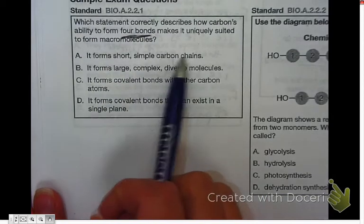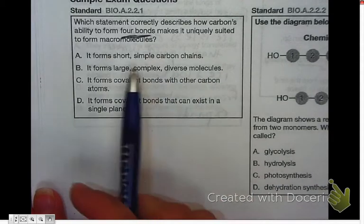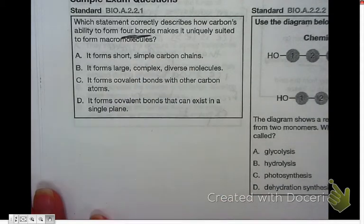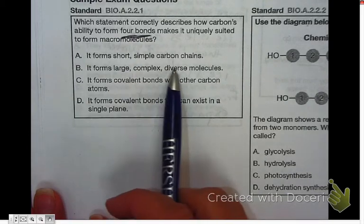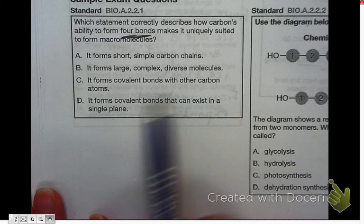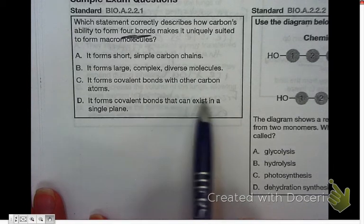It forms short, simple carbon chains? Well, it can. It forms large, complex, diverse molecules? It can. But we want to focus in on the bonds. It forms covalent bonds with other carbons. It forms covalent bonds that can exist in a single plane.